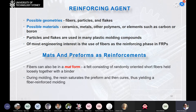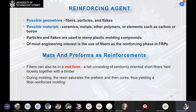Sometimes a mat is used as reinforcement — fibers can be used in a mat format to reinforce structures like tires. A mat is a felt consisting of randomly oriented short fibers held loosely together with binders. Mats are commercially available as blankets of various weights, thicknesses, and widths. You can apply layers with epoxy multiple times to form the desired shape, as in fiberglass manufacturing. Mats can also be cut and shaped into preforms for some closed mold processes. During molding, the resin saturates the preform and completes the fiber reinforced molding process.